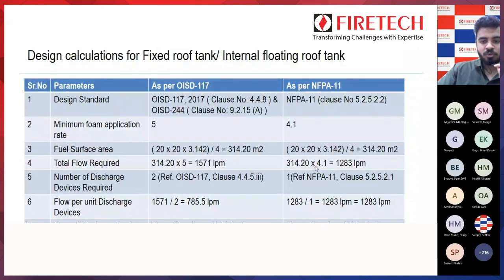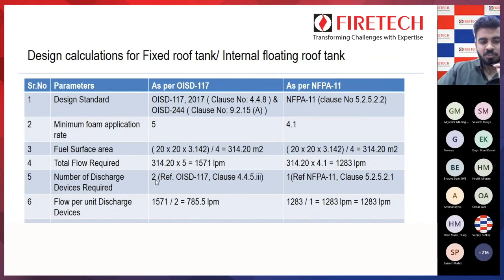For NFPA 11: 314.20 × application rate of 4.1 gives 1283 lpm total flow required. For number of discharge devices, as per OSD 117 clause 4.4.53, the minimum discharge devices to be used is 2. As per NFPA 11 clause 5.2.5.2.1, the minimum discharge devices to be used is 1.